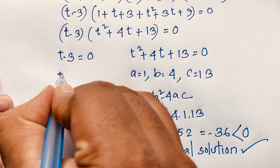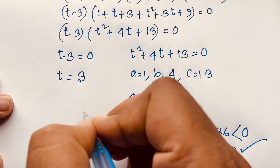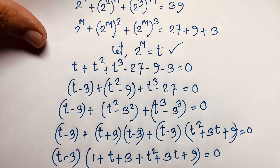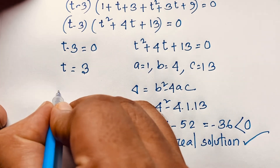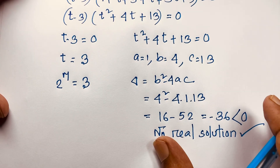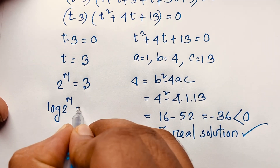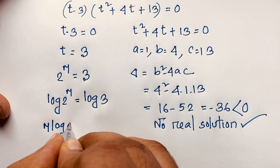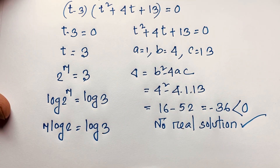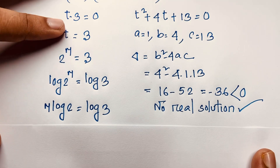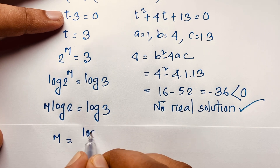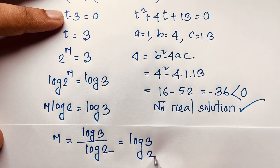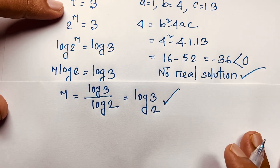So the valid case is t minus 3 equals 0, giving t equals 3. Now recall that t equals 2 to the power m. Substituting back: 2 to the power m equals 3. Applying natural logarithm to both sides: log(2^m) equals log 3. By the logarithm power rule, m times log 2 equals log 3. Dividing both sides by log 2, we get m equals log 3 over log 2, which equals log base 2 of 3. This is our final answer.